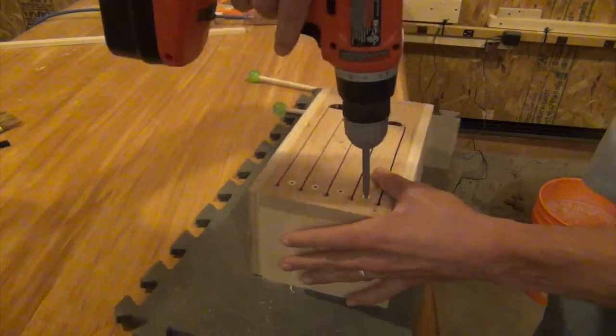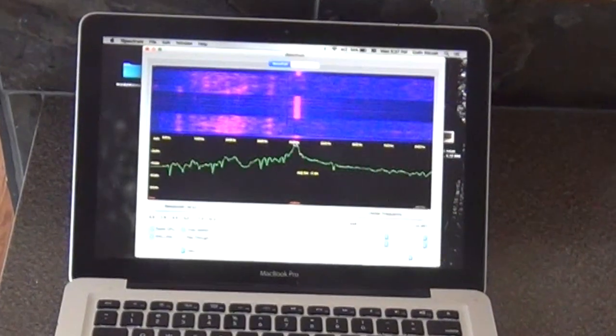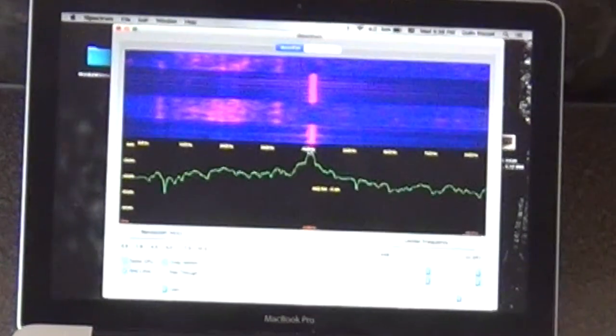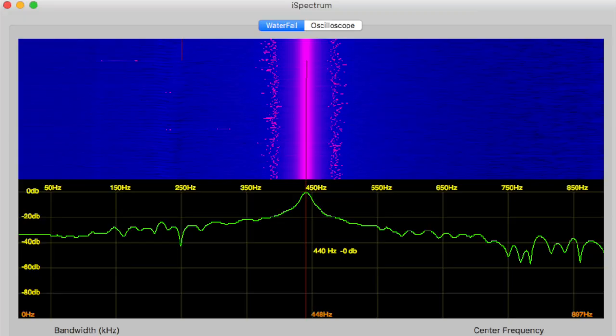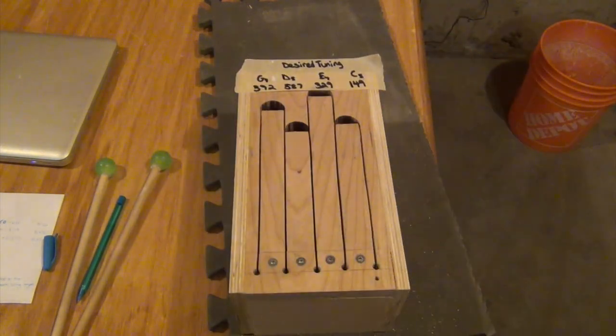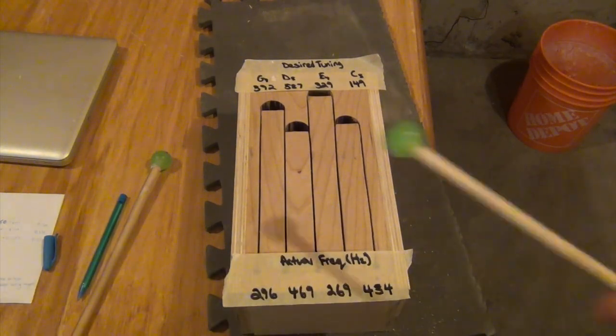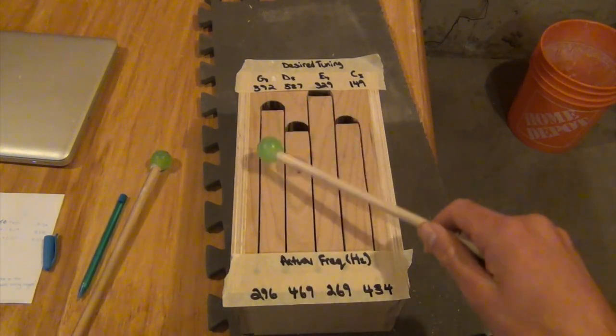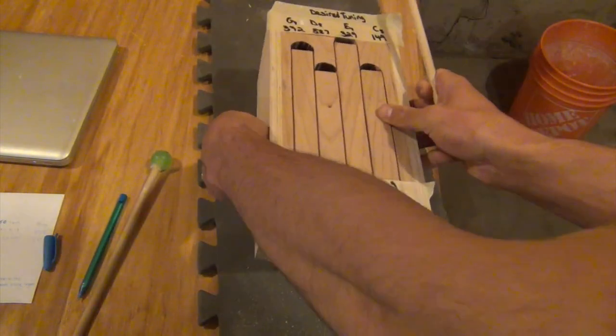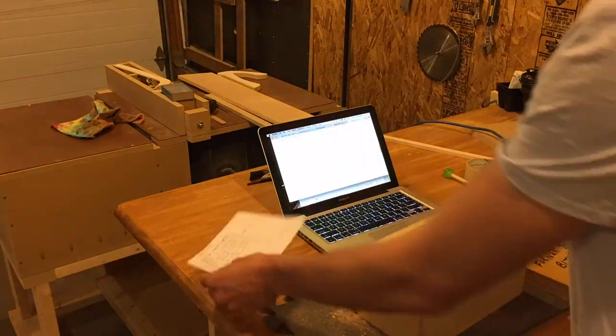Before doing any tuning, I wanted to check the frequency of each tongue and compare it to the calculated value. I used my built-in mic and a free program called iSpectrum to check the frequency of each tongue. As you can see, each tongue came in much lower than the desired frequency. I think this was due to my error in determining where to measure the length from. Because of this miscalculation, I ended up tuning my drum to different notes than I had planned. However, because the relative lengths were still close, the tuning process only took me about 15 minutes for the whole drum.